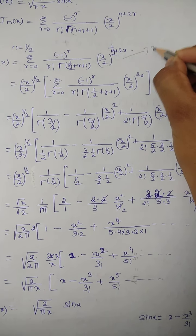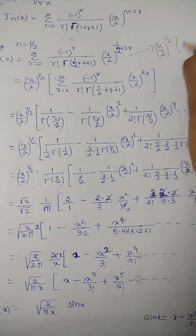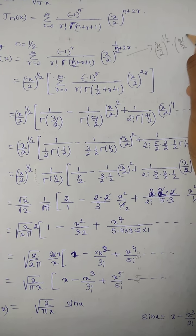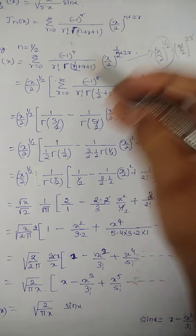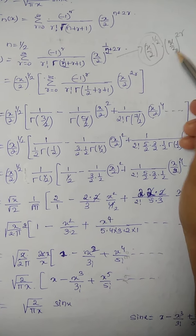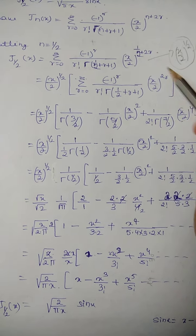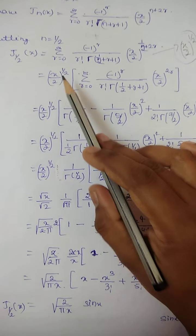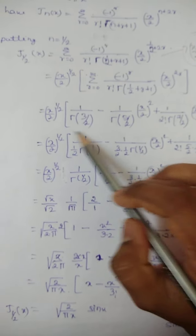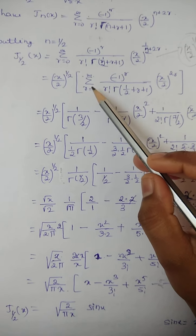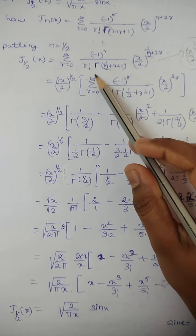So I have split (x/2)^(1/2) · (x/2)^(2r): the first factor is taken outside the summation, and the remaining term is written inside the bracket. So (x/2)^(1/2) is outside as it is.